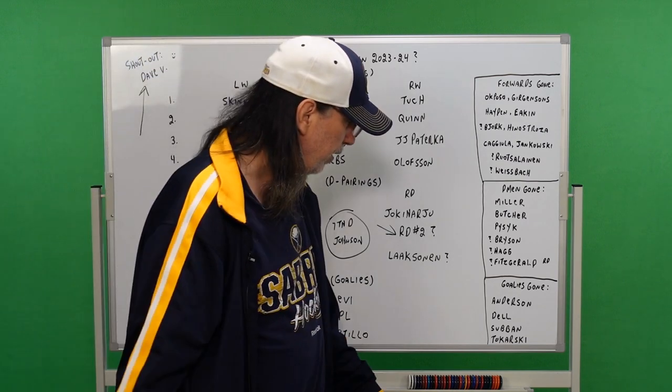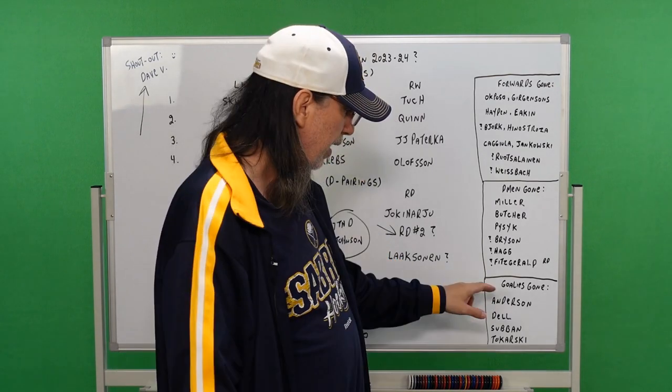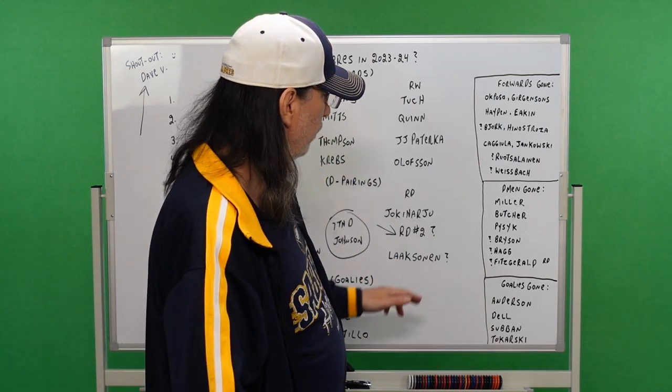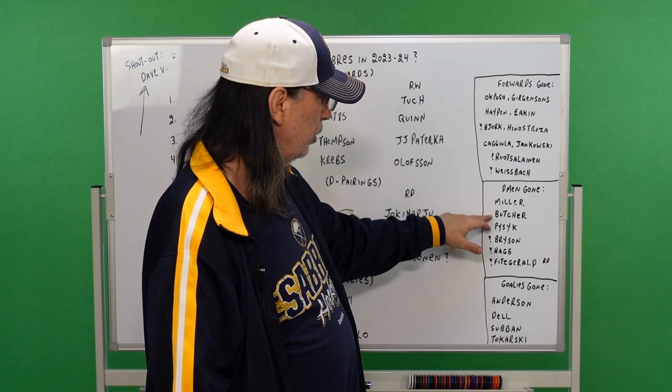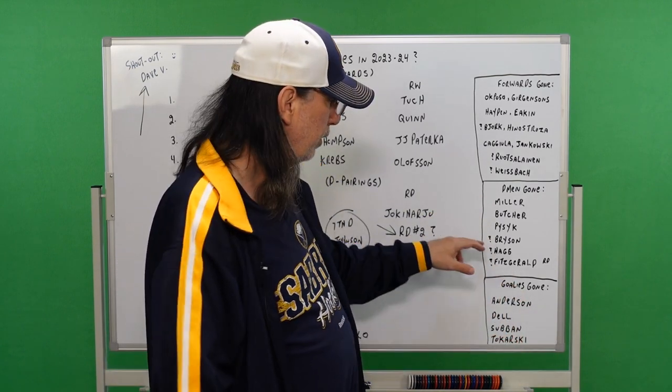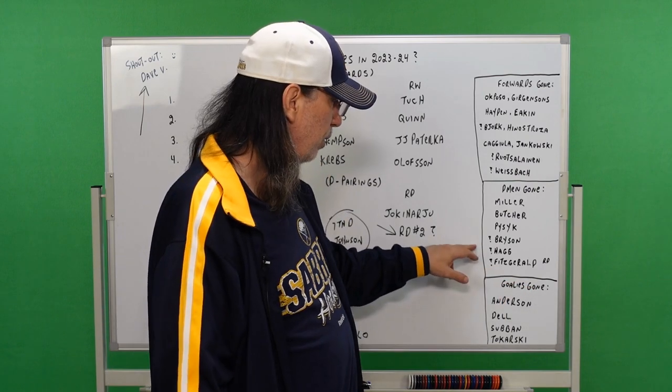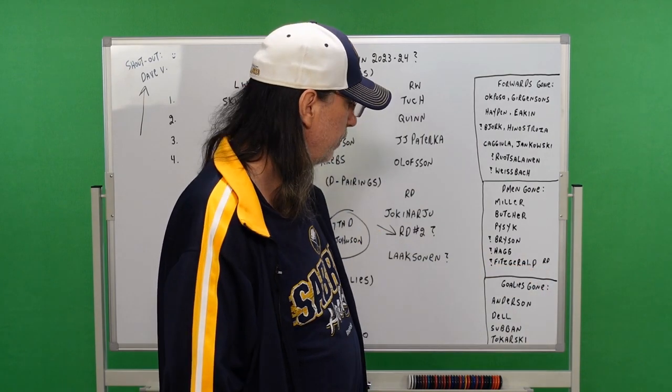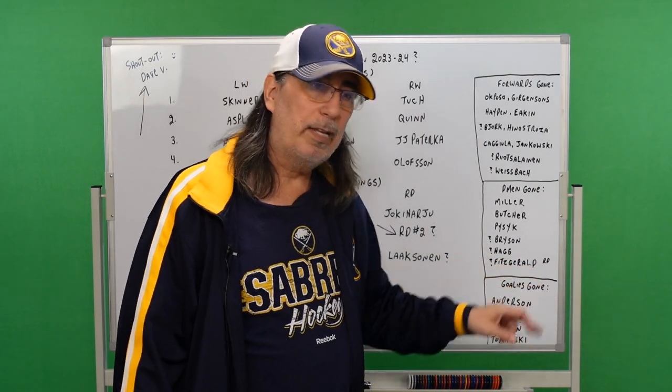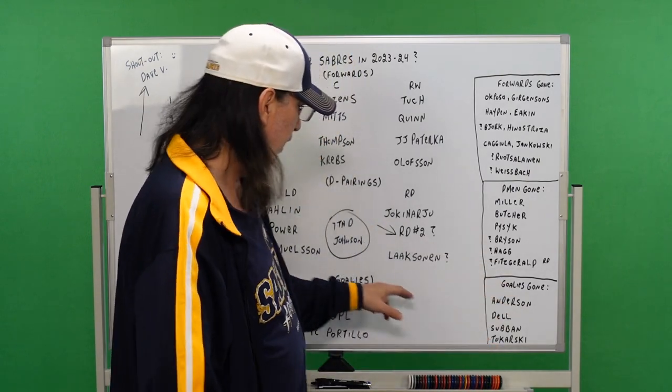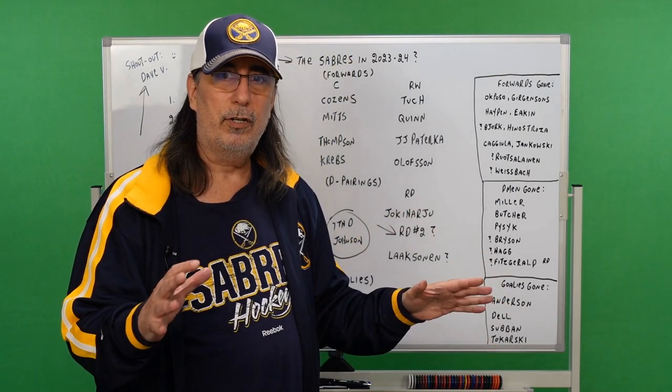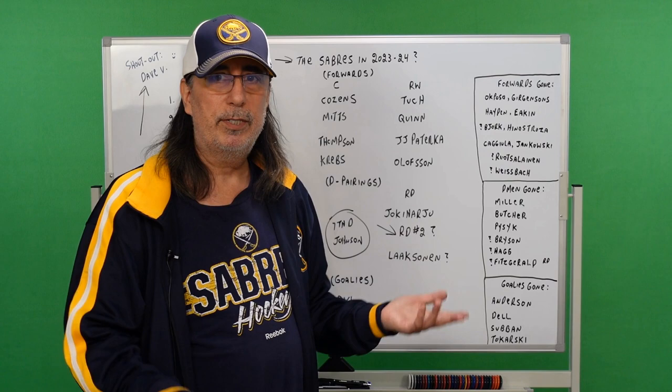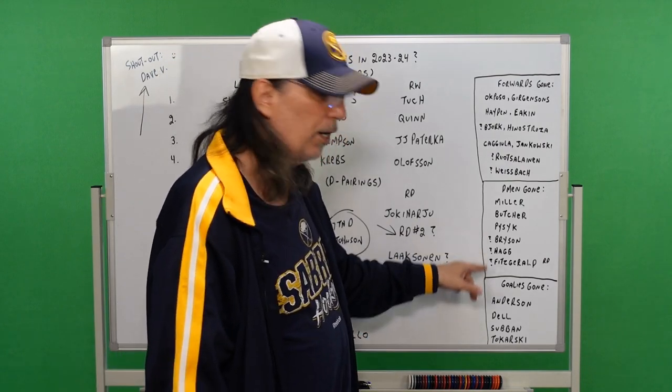Now I'm going to go over this with you quick here. Goalies that will be gone I believe: Anderson, Dell, Subban, Tokarski, I'm guessing in two years are gone. Defensemen that I believe will be gone: Miller, Butcher, Pilut will be gone. Bryson, question mark. Hagg, question mark. Fitzgerald, question mark, mostly because he's a right defenseman, he's a right-sided defenseman. So I don't want to put him here because I don't think Fitzgerald and Laksonen are in our long-term plans. One of them might be, which I'm guessing it'll be Laksonen. But who knows right? We don't know what's going to happen in the next two years. So they get question marks.